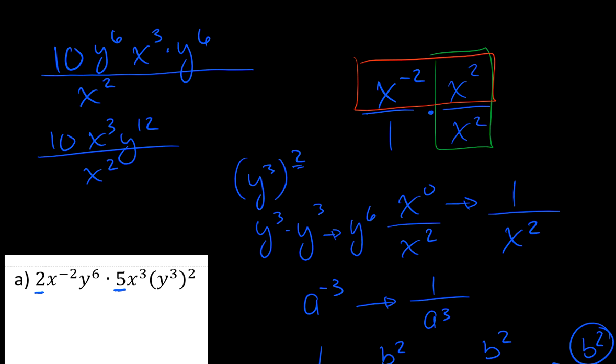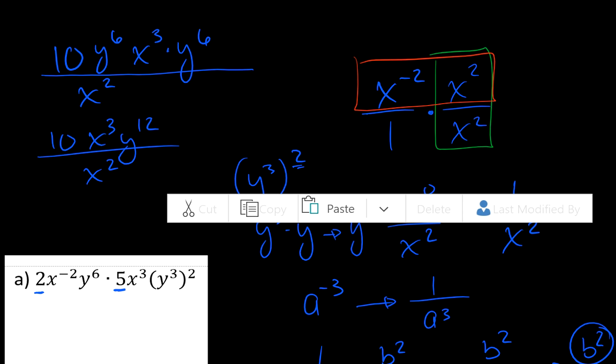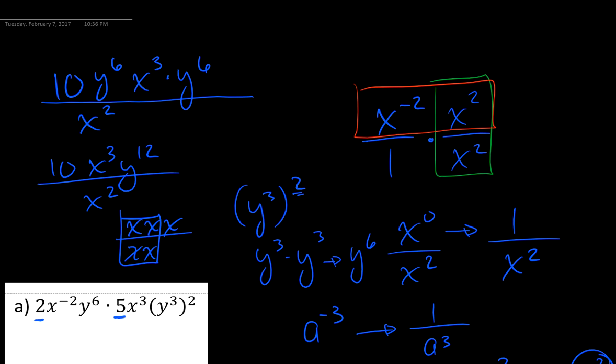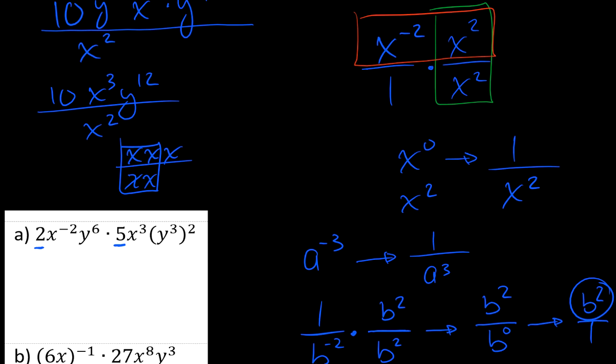So I can clean this up a little bit more real quickly just by collecting the factors of y. So I can write this as 10x to the third y to the twelfth power all over x squared. And then there's one final thing that we can do. If I look at my numerator, I can see that there are three factors of x. And in my denominator, there's two factors of x. And if I clean that up, I can see that I'm left with a single factor of x in my numerator. So the final answer that I would write down would be 10 times x times y to the twelfth power.